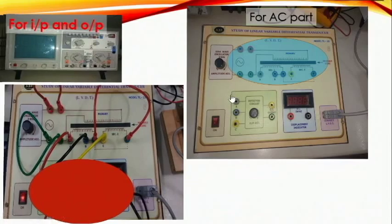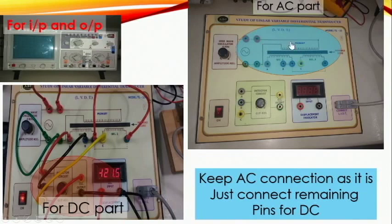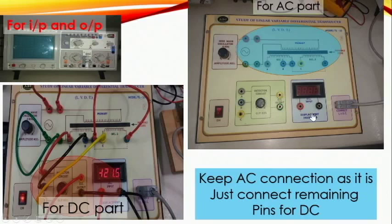Now let's see the connection for the DC part. This AC part remains as it is — don't touch it. Just connect A from here, B to here, and C to here. This connection of AC becomes the input for the DC part. Keep this knob high, and by adjusting it you can observe the output for DC observation. Connect the yellow wire to red and the green wire to black, and now you can see the observation.